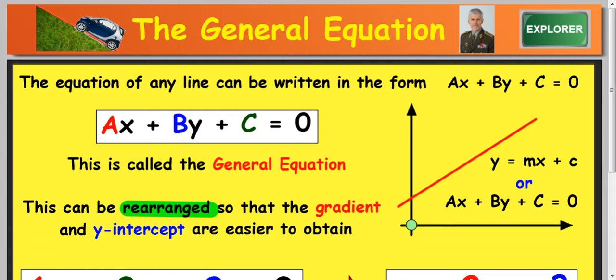In this lesson we're going to talk about what's called the general equation of a straight line. Now the format of the general equation has everything over to the left hand side. So it's called ax plus by plus c.